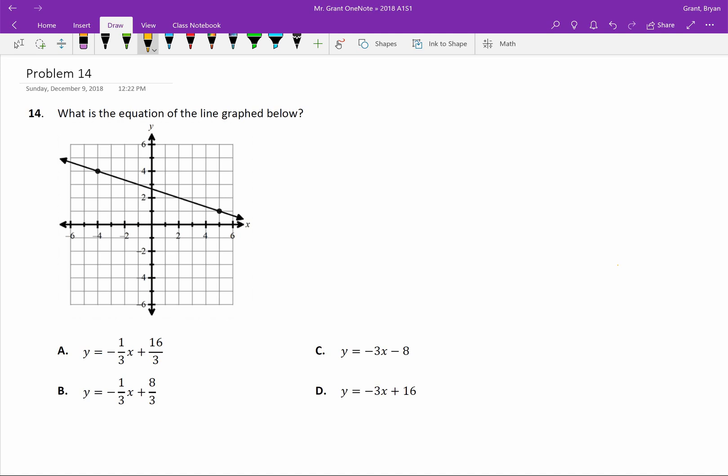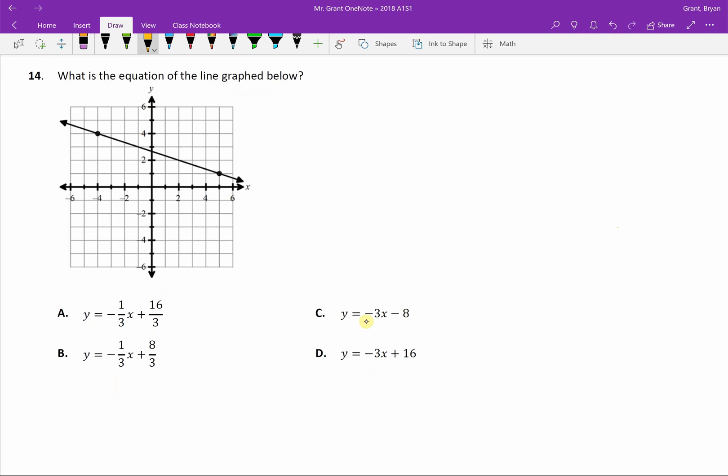Welcome back to your review for your Algebra 1 semester 1 final exam. We're working problem 14 today, or it might be a different number in the future. But the idea behind it is you are given some sort of graph, a graph of a line, which makes sense because first semester we deal with those linear equations. And then you're given four options at the end, and it looks to me like all four of these options are written in that slope intercept form, that m times x plus b.